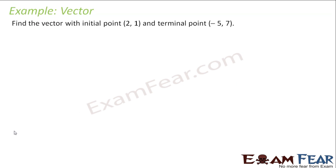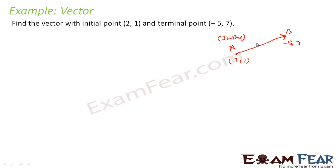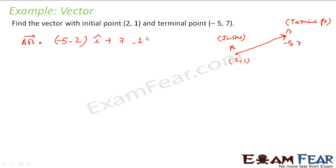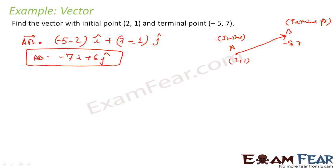Let us take an example. We have to find the vector with initial point (2, 1) and terminal point (−5, 7). So vector a goes from initial point (2, 1) to terminal point (−5, 7). Vector AB equals terminal point minus initial point: (−5 − 2)î + (7 − 1)ĵ.